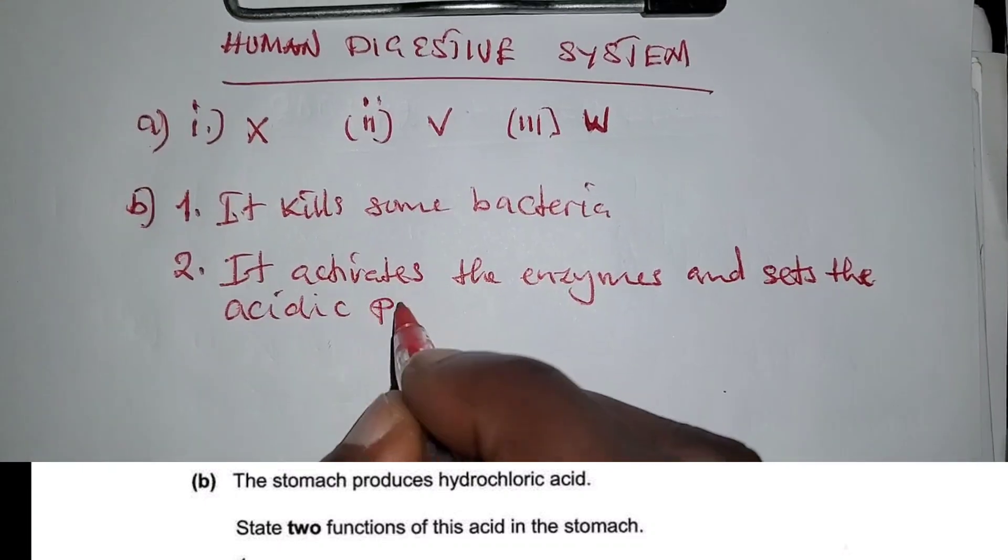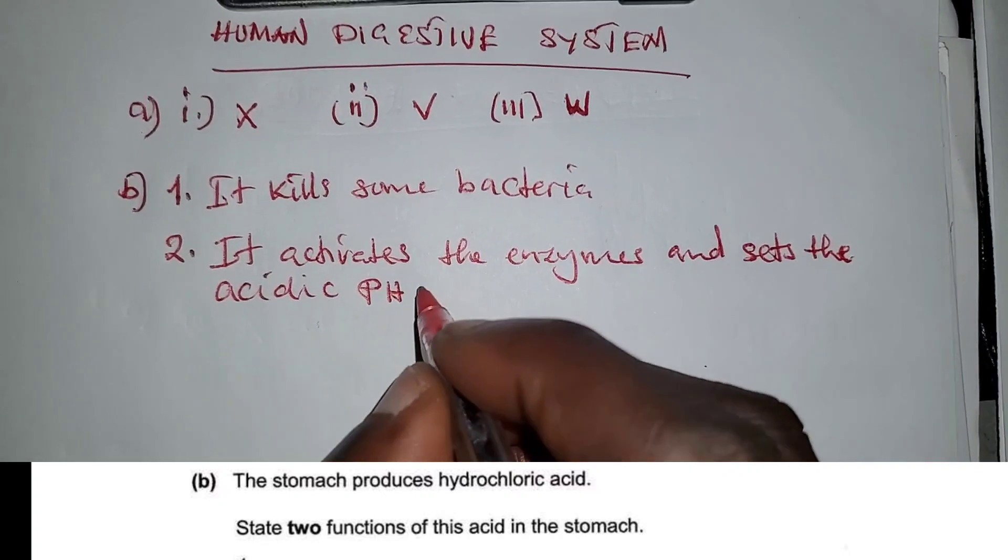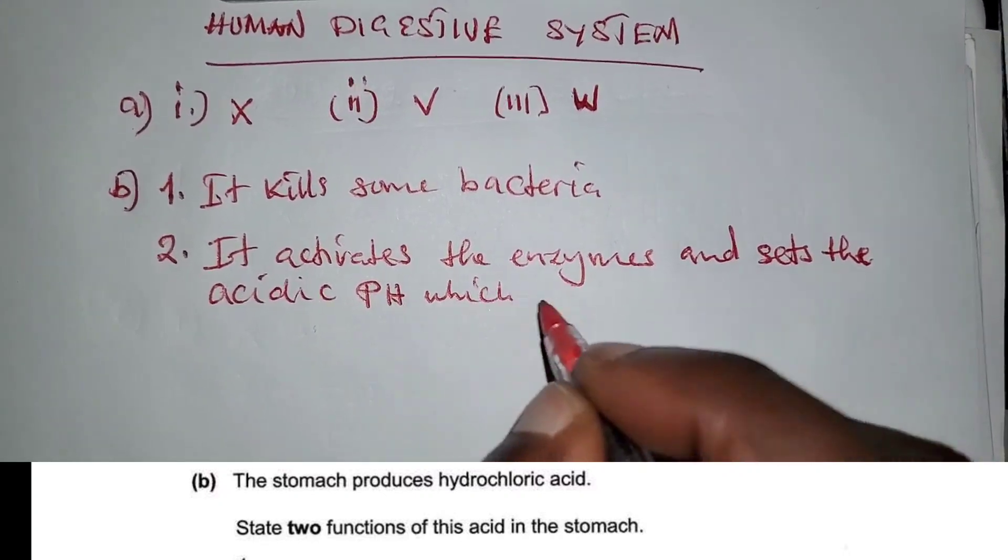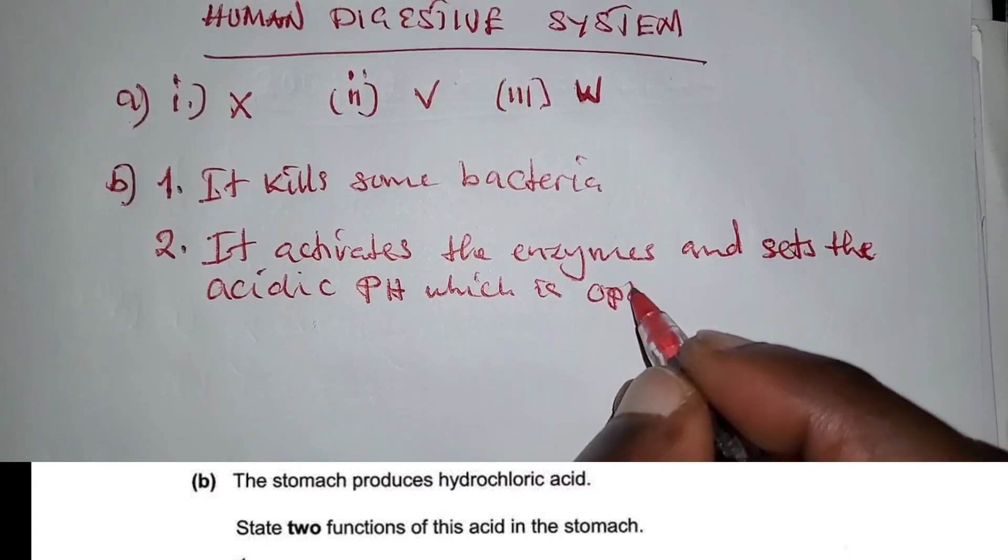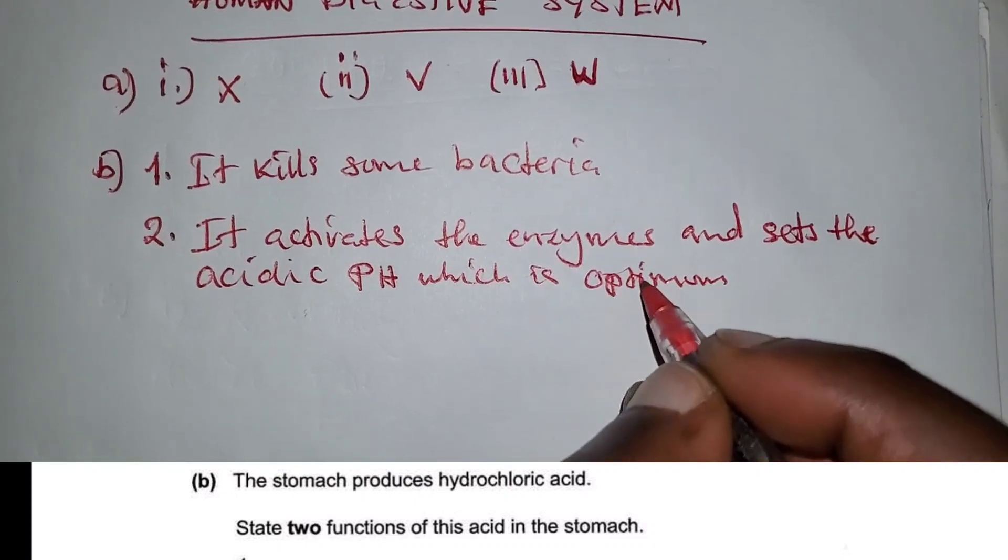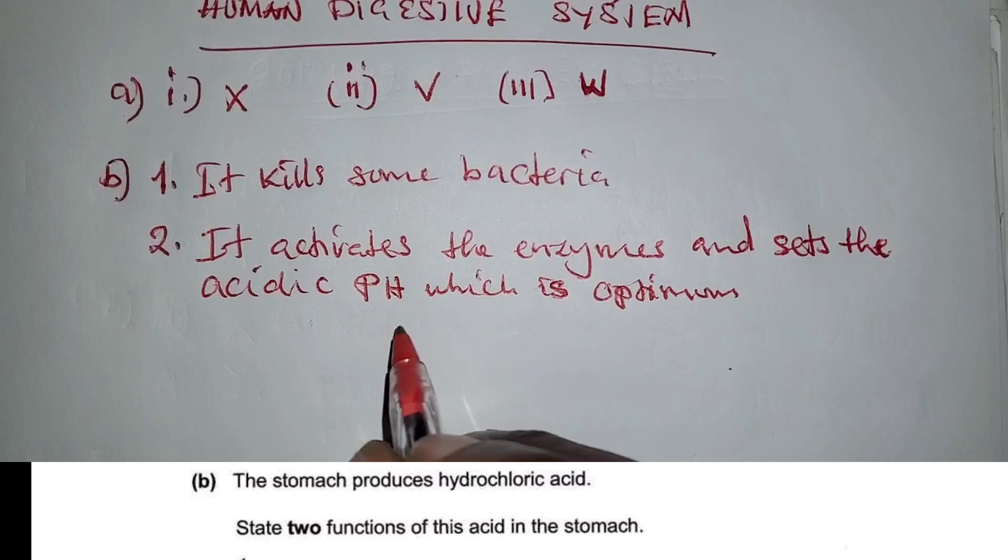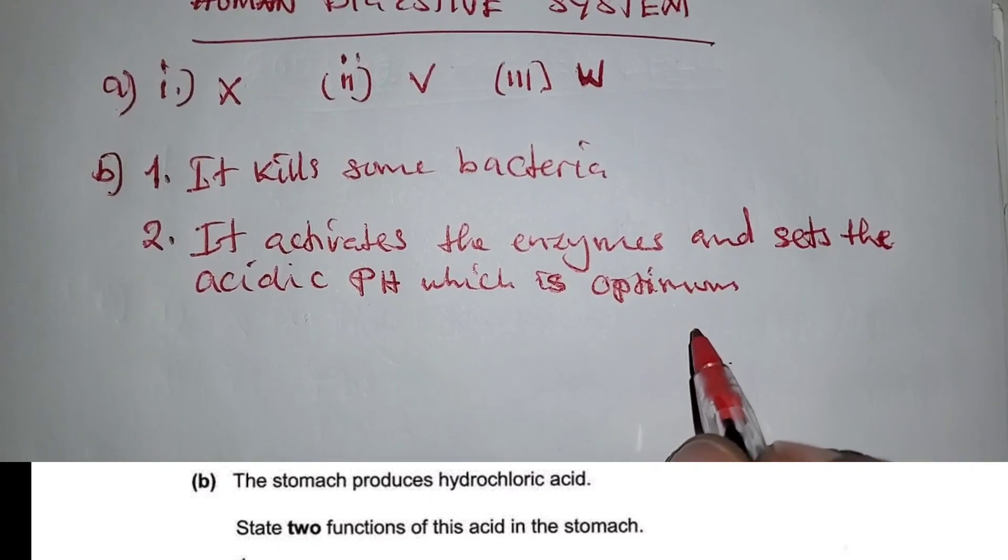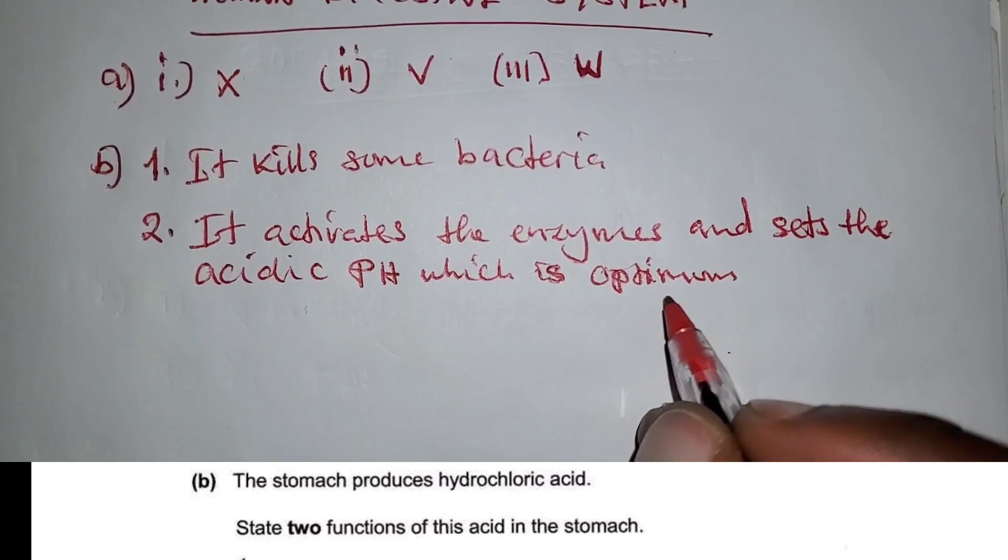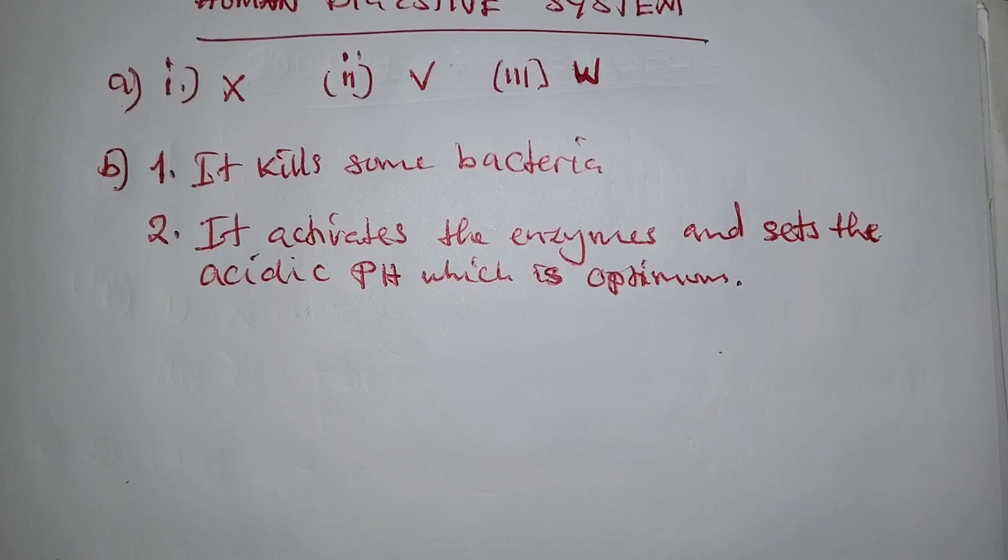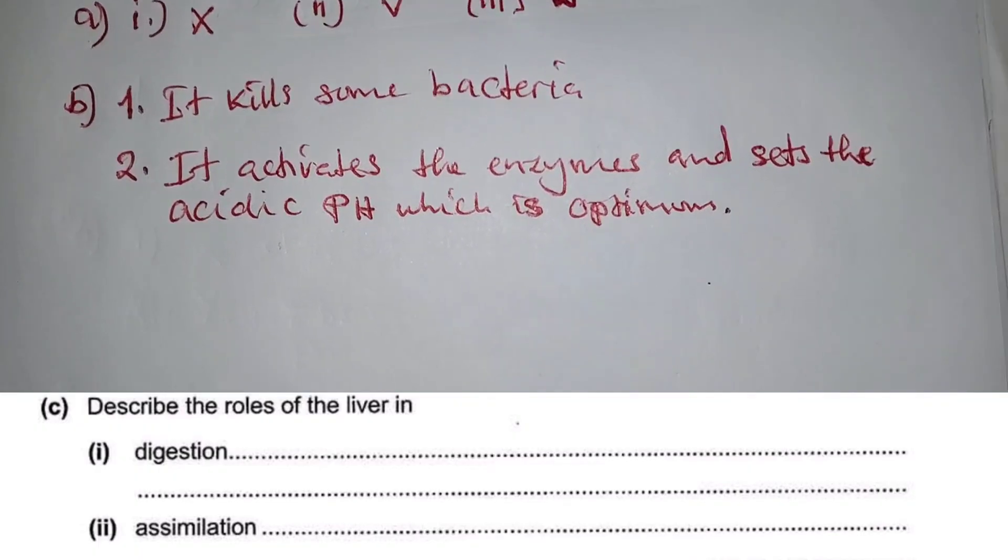Remember, the word optimum means suitable. So optimum pH is the suitable pH at which an enzyme works best. Optimum temperature is the temperature at which an enzyme works best.